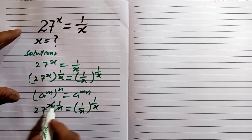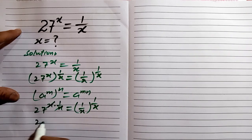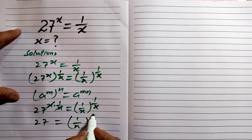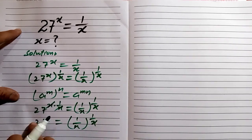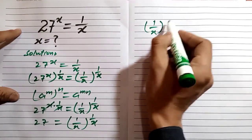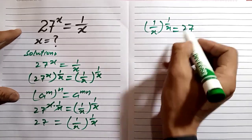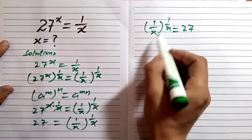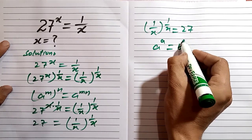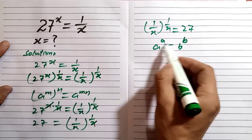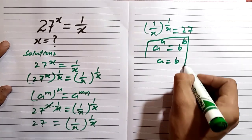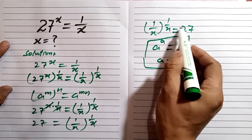The x will be cancelled on this side, so we have 27 on one side and (1/x)^(1/x) on the other side. We can write this as (1/x)^(1/x) = 27. In this equation we can apply the power rule: if a^a = b^b, then we can compare the exponents and conclude a = b.